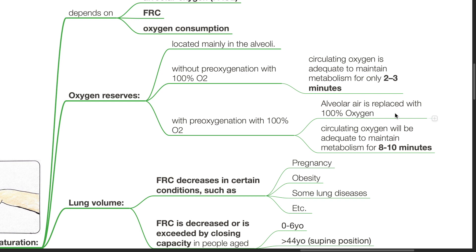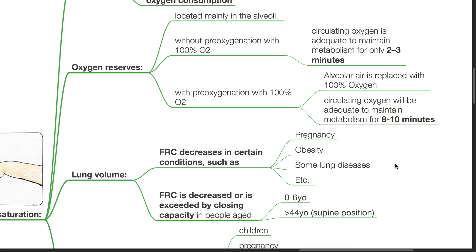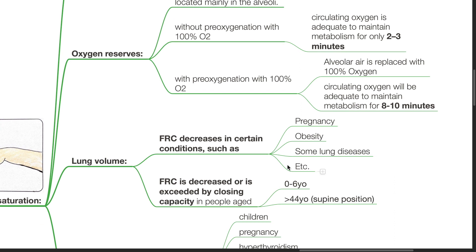Lung volume: FRC decreases in certain conditions such as pregnancy, obesity, and lung disease. FRC is decreased or exceeded by closing capacity in people aged 0–6 years old and over 44 years old in a supine position.